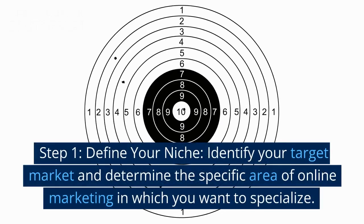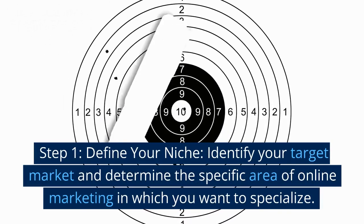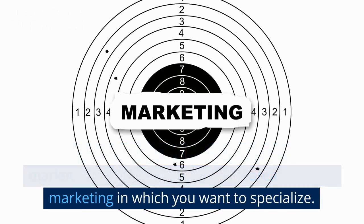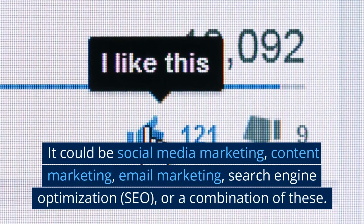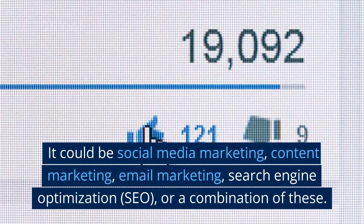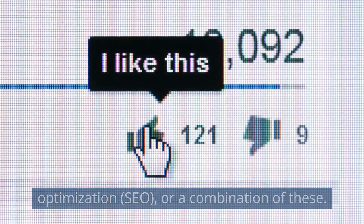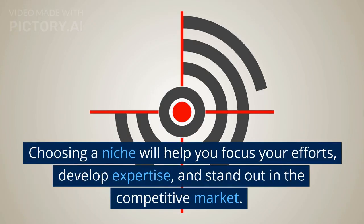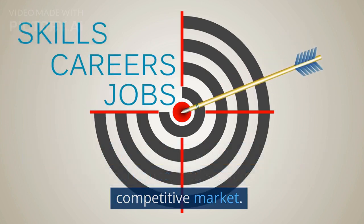Step 1: Define your niche. Identify your target market and determine the specific area of online marketing in which you want to specialize. It could be social media marketing, content marketing, email marketing, search engine optimization (SEO), or a combination of these. Choosing a niche will help you focus your efforts, develop expertise, and stand out in the competitive market.